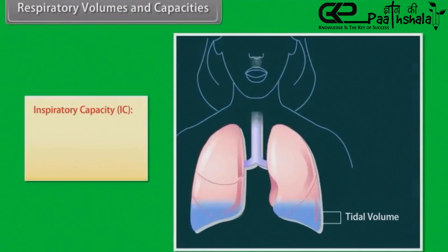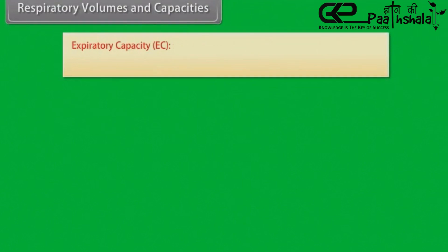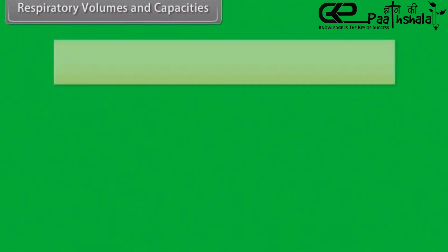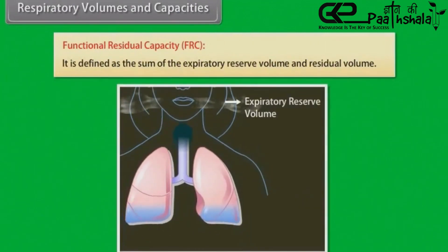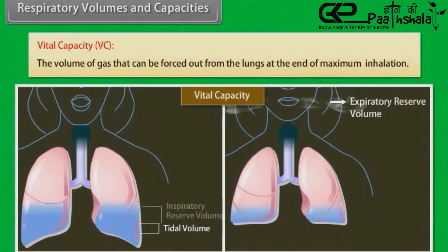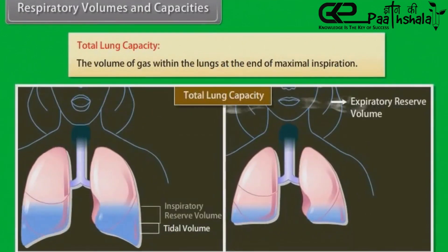Respiratory Volumes and Capacities continued. Inspiratory Capacity (IC): It is defined as the sum of the tidal volume and inspiratory reserve volume. Expiratory Capacity (EC): It is defined as the sum of the tidal volume and expiratory reserve volume. Functional Residual Capacity (FRC): It is defined as the sum of the expiratory reserve volume and residual volume. Vital Capacity (VC): The volume of gas that can be forced out from the lungs at the end of maximum inhalation. Total Lung Capacity: The volume of gas within the lungs at the end of maximum inspiration.